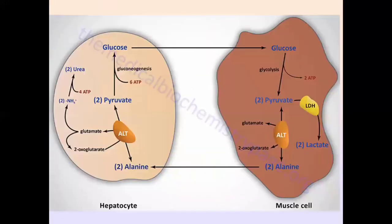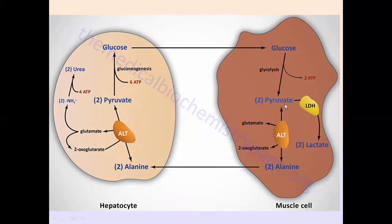So today you learned about the glucose-alanine cycle: how amino groups are cleared from the muscles and transported to the liver in the form of alanine. In the liver, alanine through transamination reactions is converted into pyruvate, which then undergoes gluconeogenesis to form glucose. Glucose is released into the blood, taken up by the muscles, oxidized back to pyruvate, and pyruvate is again available to accept another amino group and be converted into alanine — and so the cycle continues.